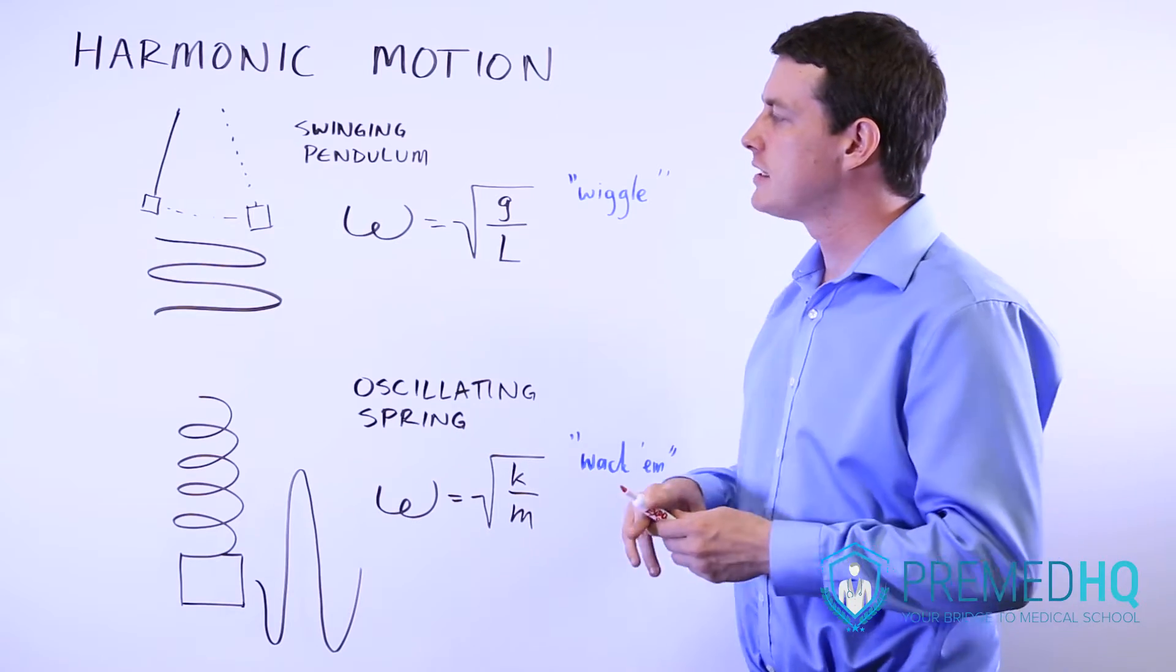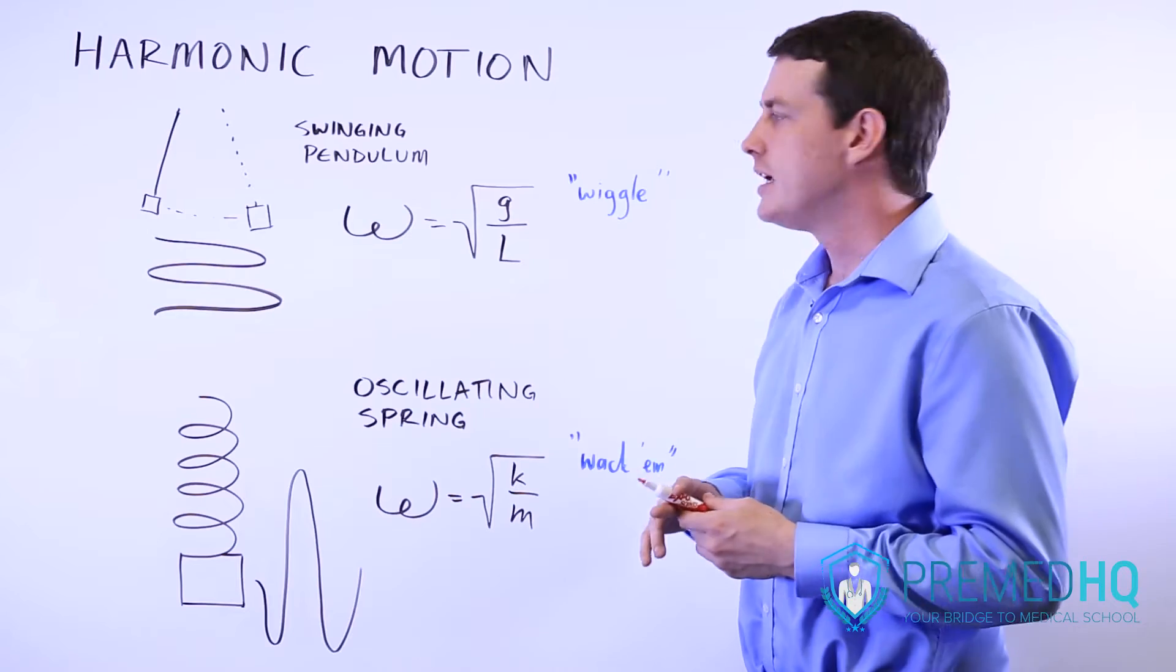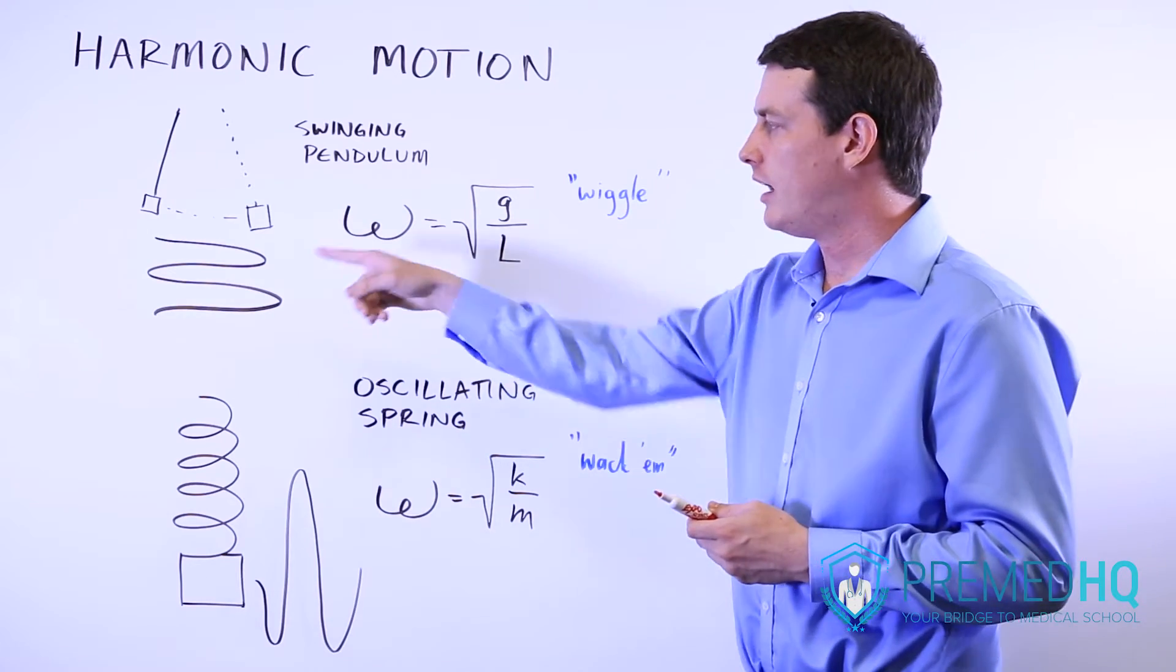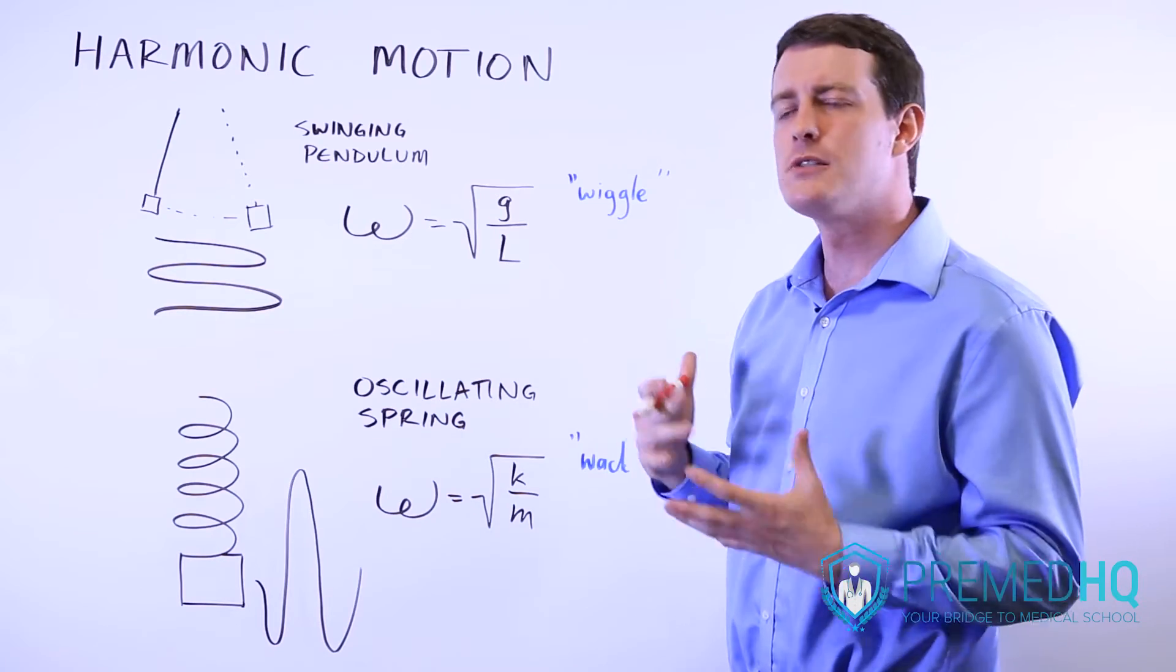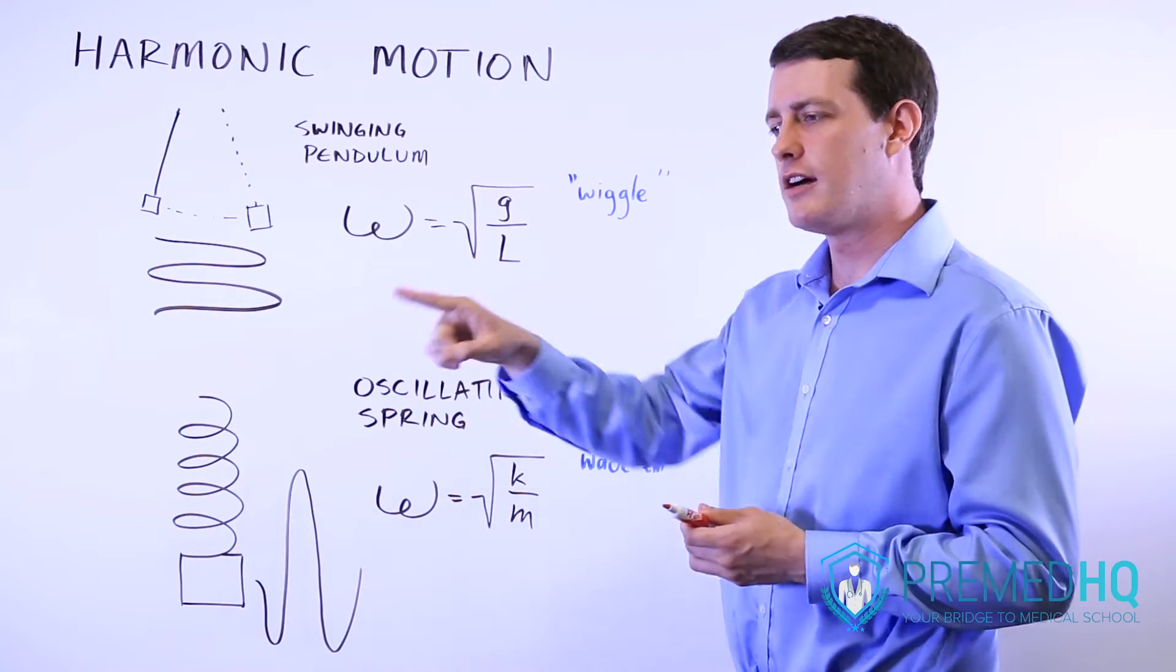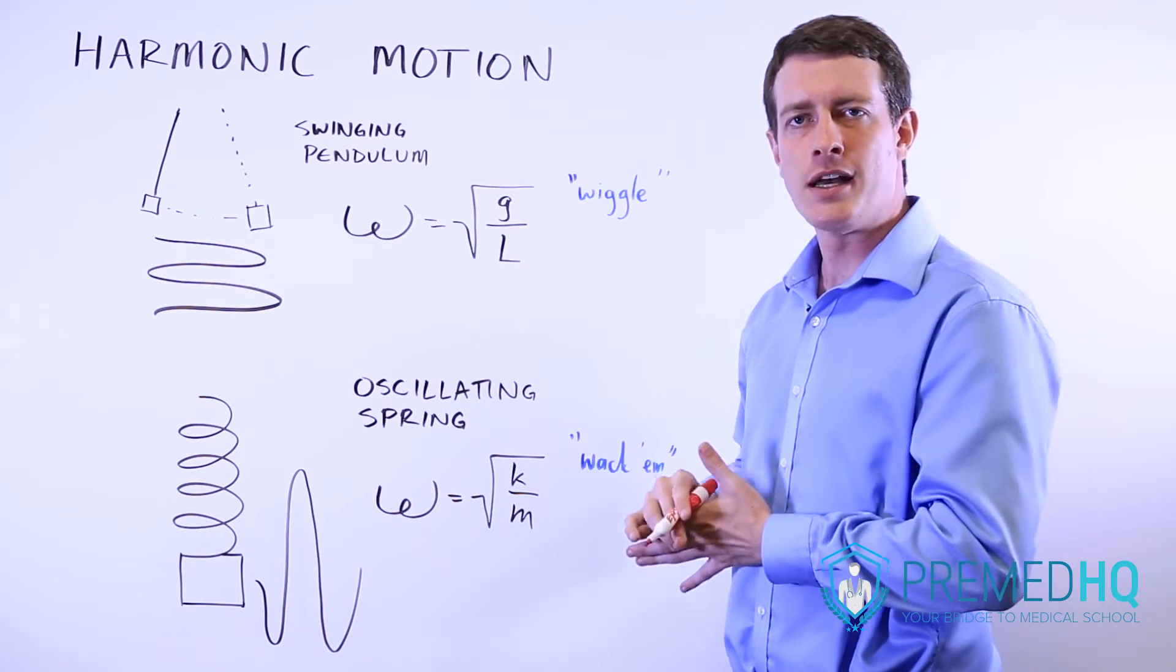And so whenever you see simple harmonic motion, oftentimes what they'll be asking you about is the angular frequency of the motion that it's exhibiting. Angular frequency is basically a measurement of the oscillation or of how many radians it completes per unit of time.